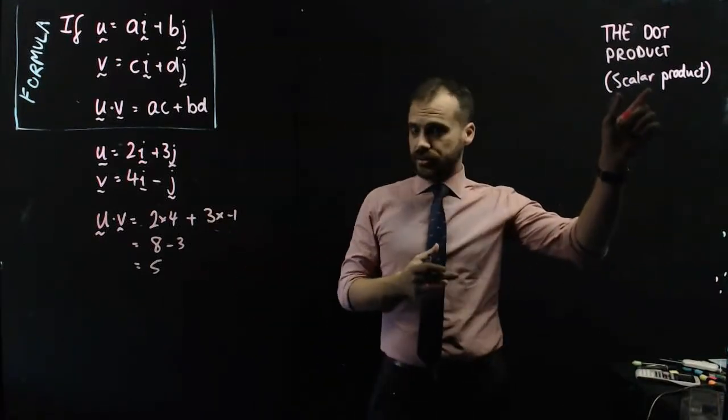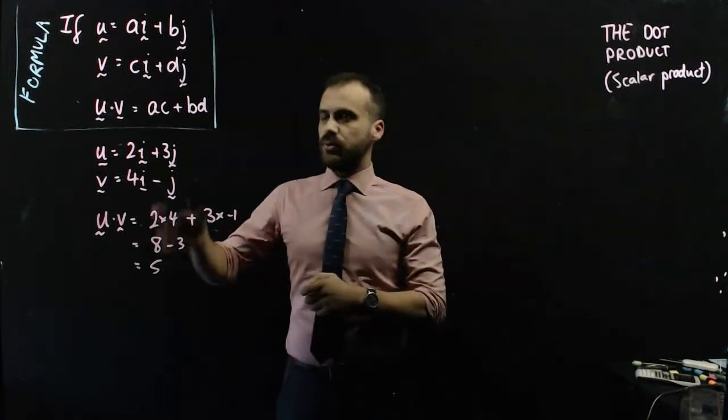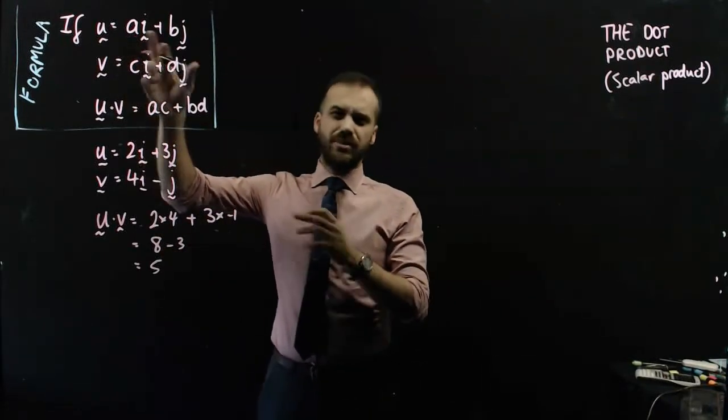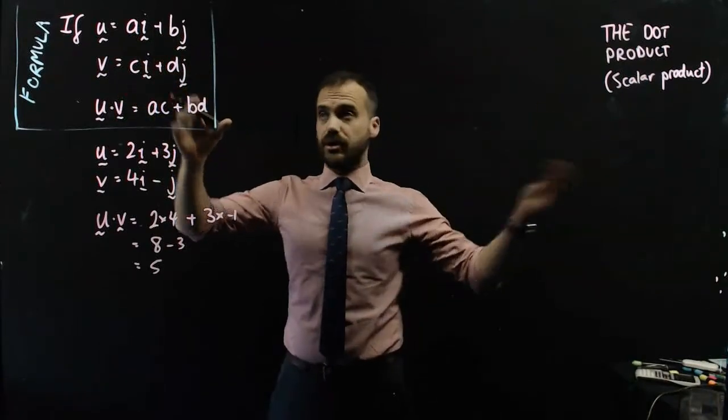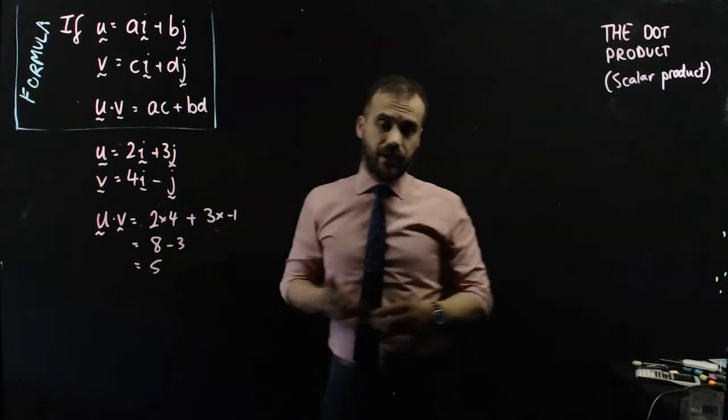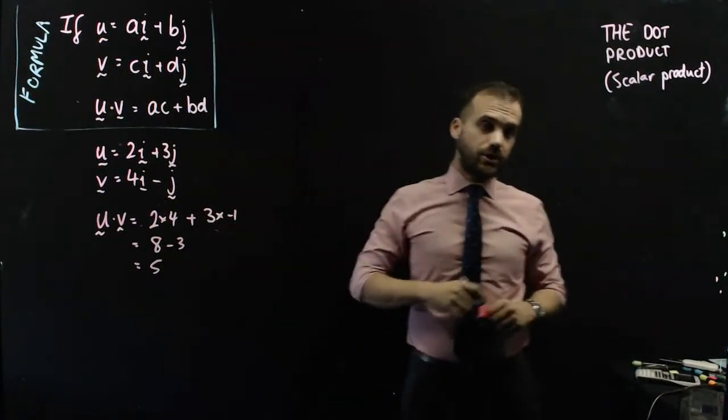Now the word scalar means number, and you can see that when we multiply these two vectors, you might think that you would get another vector, but when we do our scalar product, you don't get a vector, you get a number. Now a couple of things to note about your dot product.